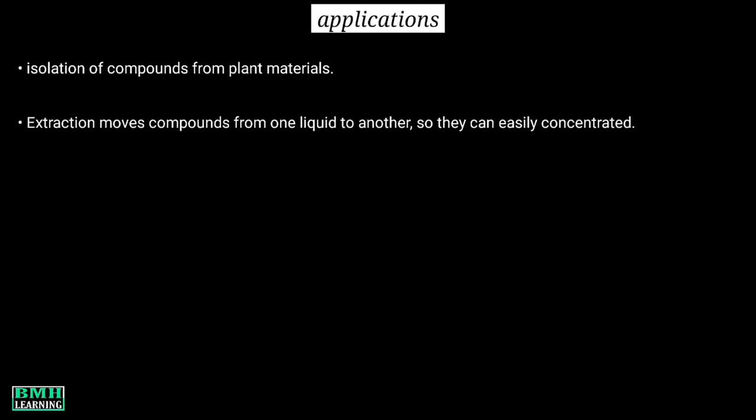Applications of batch extraction: It is a principal method for isolating compounds from plant materials. Extraction moves compounds from one liquid to another so that they can be more easily manipulated or concentrated. In other words, the technique is used to pre-concentrate analytes present in samples at very low levels, whose quantification or detection might otherwise be difficult or impossible.